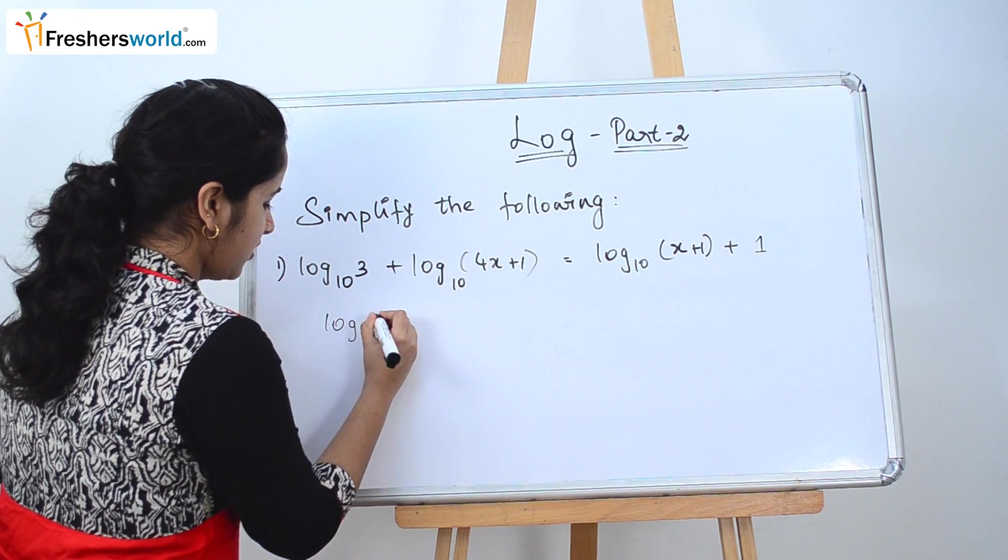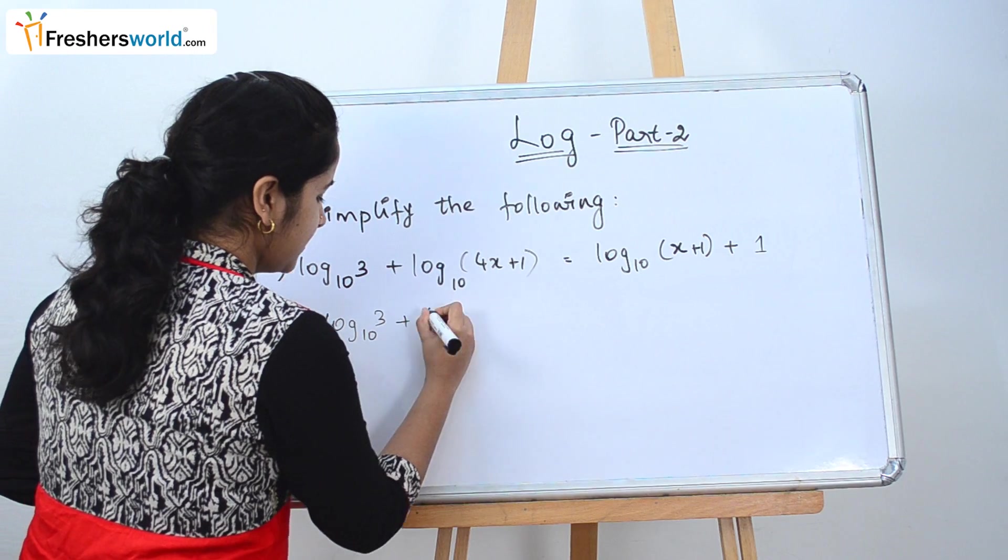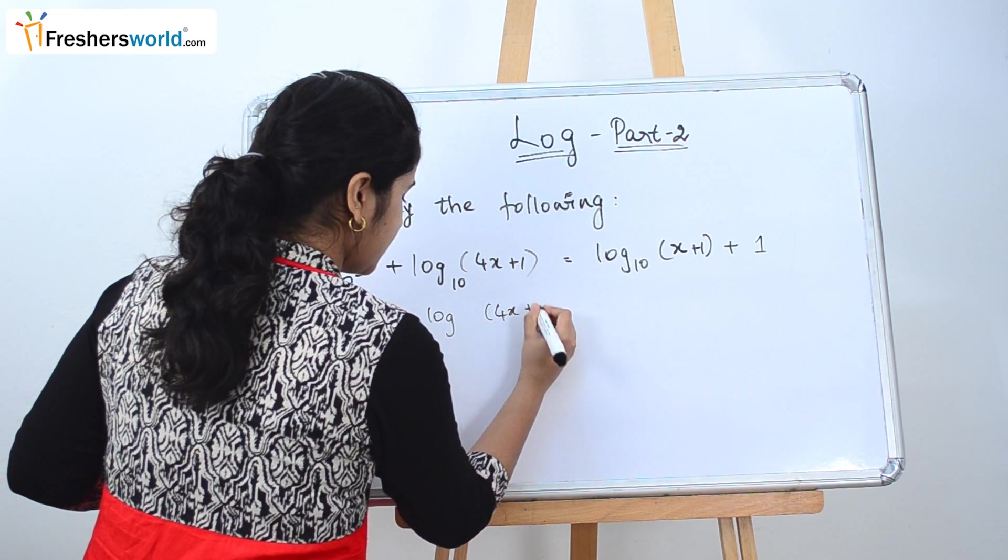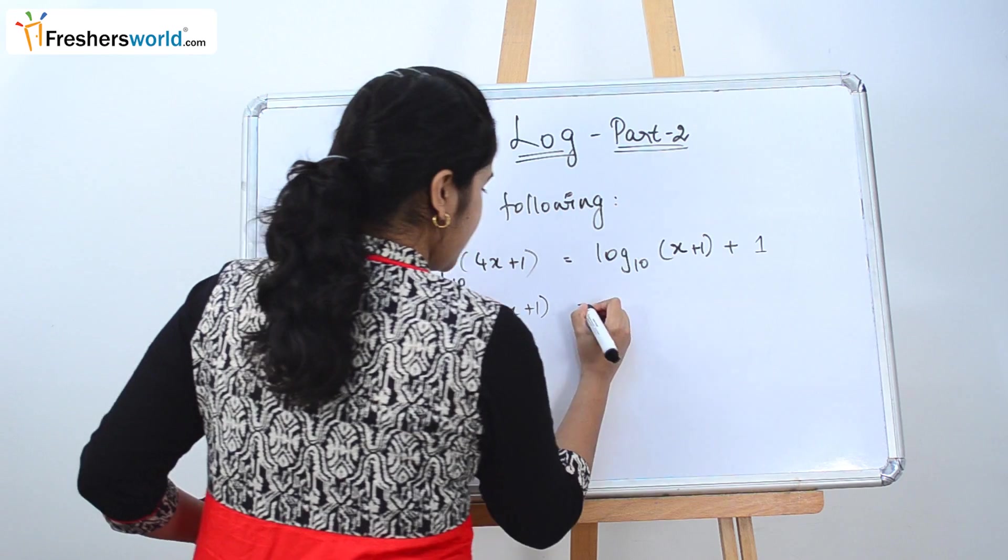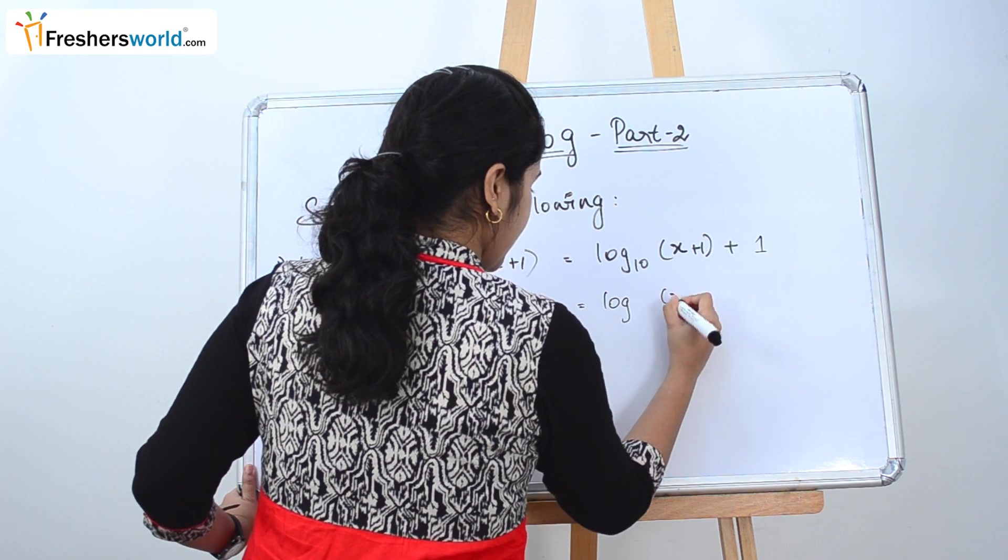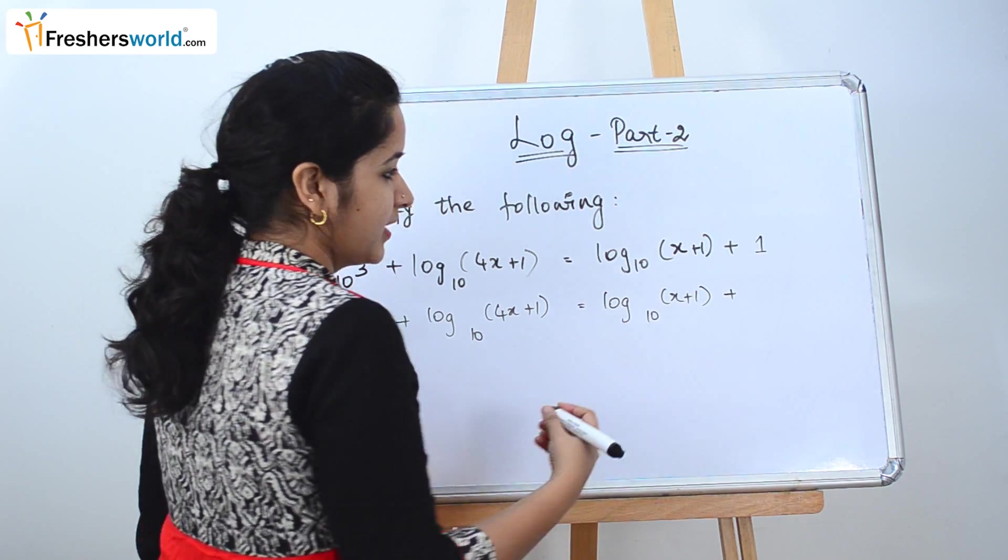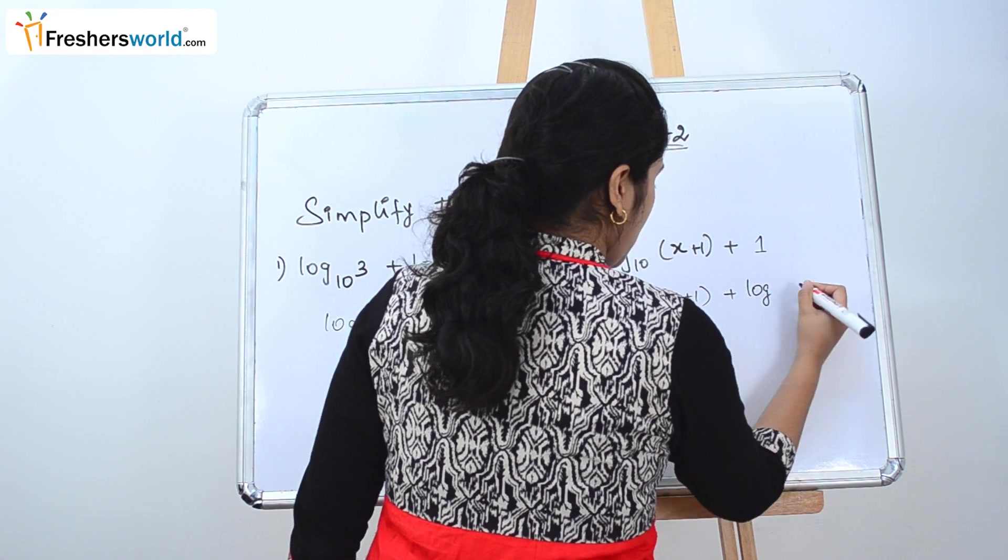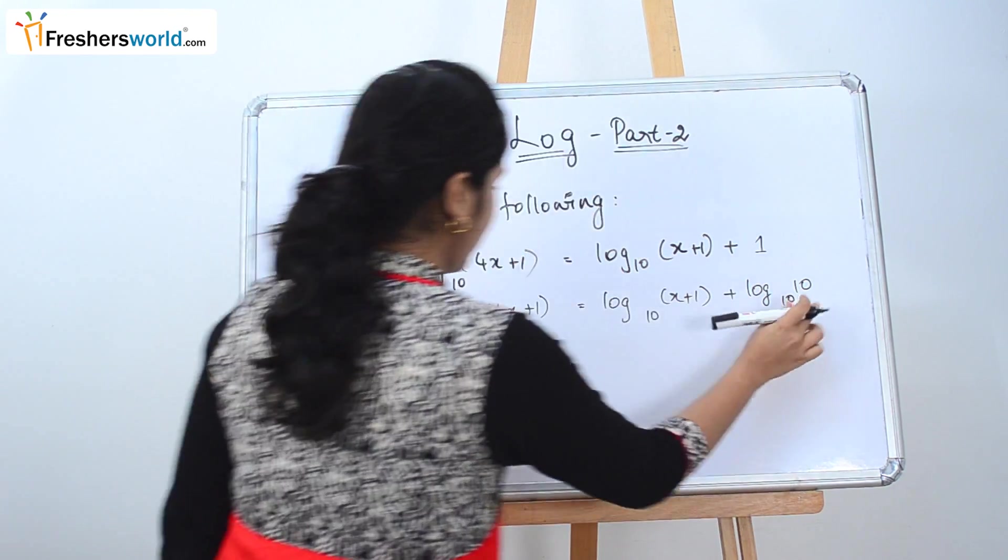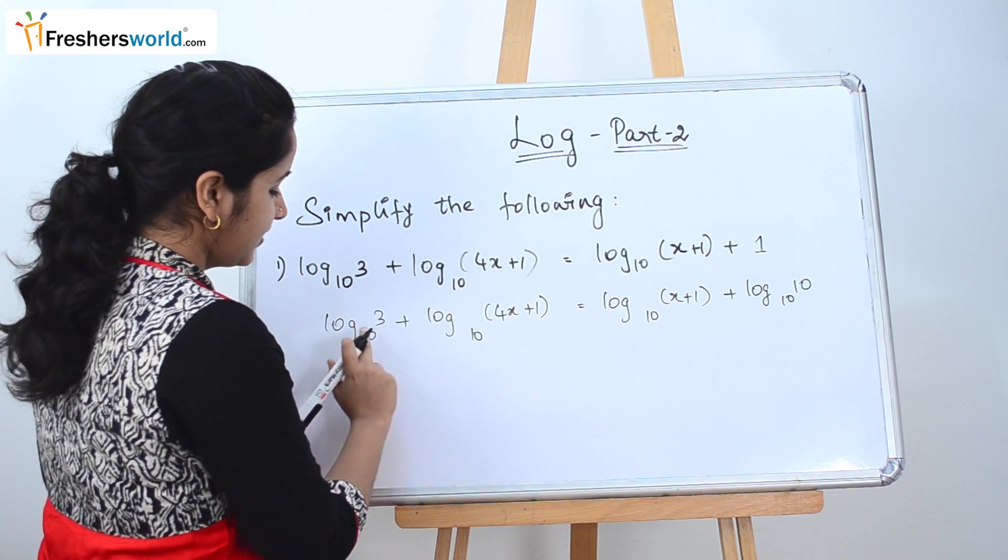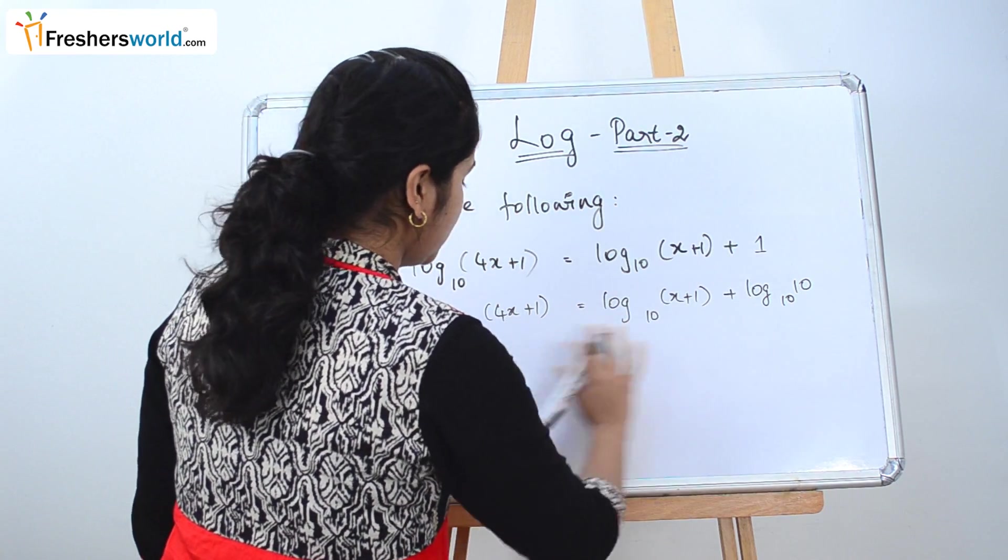So log₁₀(3) + log₁₀(4x+1) is equal to log₁₀(x+1). So how can 1 be written? 1 can also be written as log₁₀(10) so that it matches with the rest of it. As you can see that the log base 10 is common throughout.